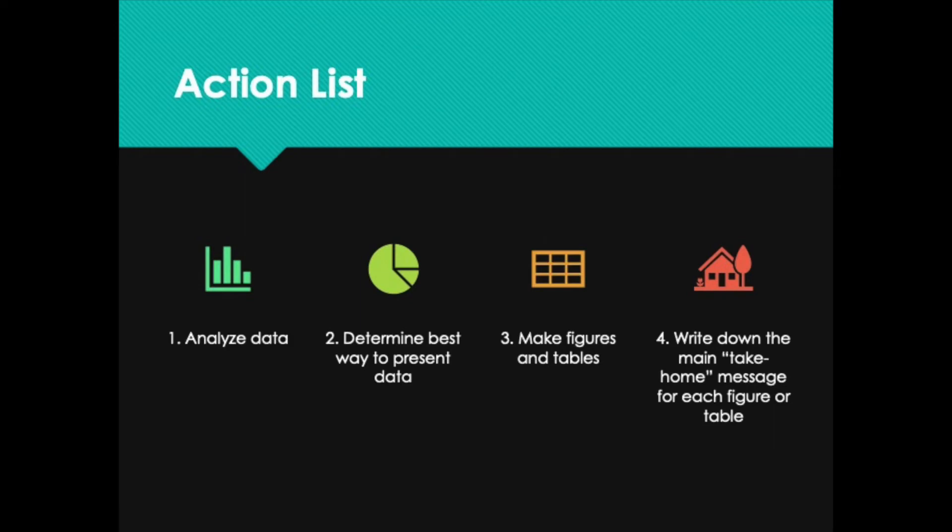It is time for your action list for this week. This is a shorter list than some other weeks, but there's still a lot to do when you make figures and tables. First, finish analyzing your data if you haven't done that already. Then determine the best way to present that data. Third, go ahead and make all of your figures and tables. The last action item is to write down the main take-home message for each figure and table. What I do is print the figure, then take a pencil or pen and write down the key message I'm going to present in the results section. What do you want readers to walk away from your figure remembering? What is the most important result they should see?